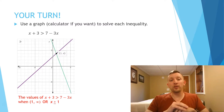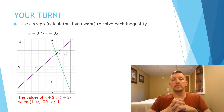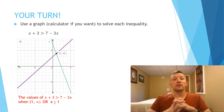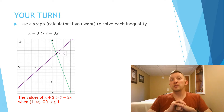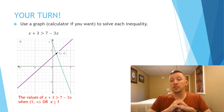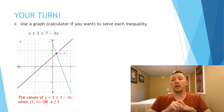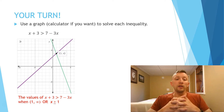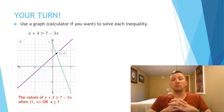For the second problem, we're graphing two linear equations. The purple graph is x plus 3, and the green graph is 7 minus 3x. We're trying to find where x plus 3 is greater than 7 minus 3x. Looking left to right, the green graph is above the purple at first, but after the intersection at (1, 4), the purple graph becomes bigger. So in interval notation, the answer is from 1 to infinity. Using an inequality, x is greater than 1.